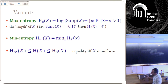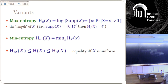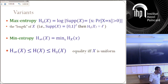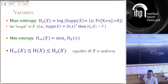It's important to remember this fact: the min entropy is always smaller or equal to the Shannon entropy. This is because it's worst-case entropy. The Shannon entropy is always smaller or equal to the max entropy — the length of the random variable — and equality holds if and only if X is uniform over its support.